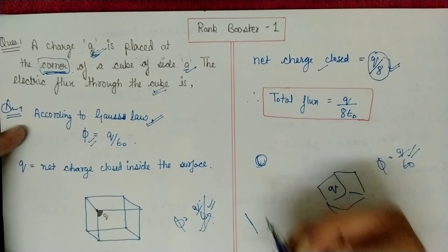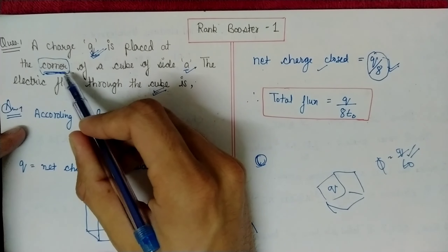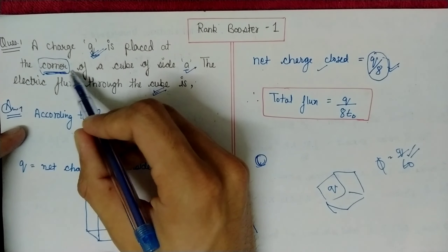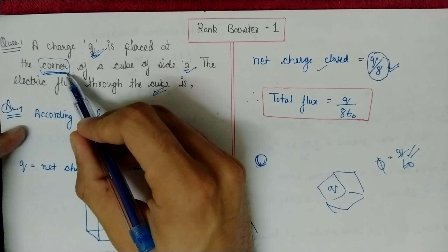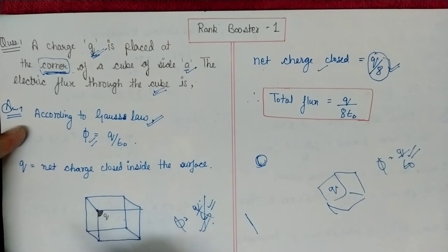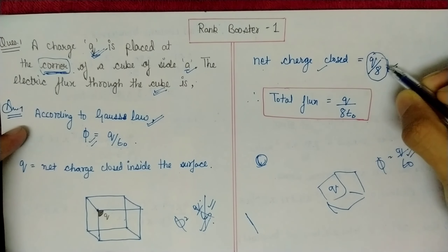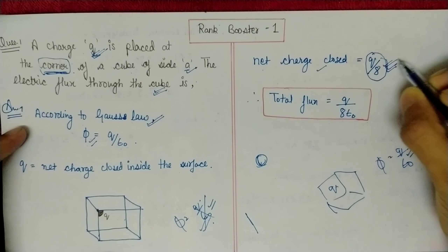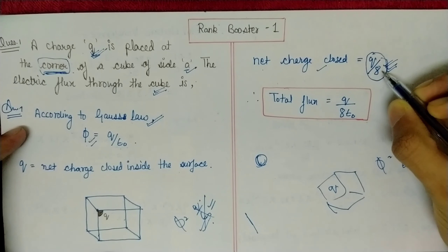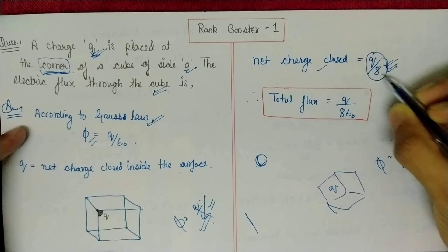But that is the wrong approach, because the charge is not placed at the center — it is placed at the corner of the cube. When a charge is placed at the corner, only 1/8 of it lies within the cube, so the net charge enclosed is Q/8.